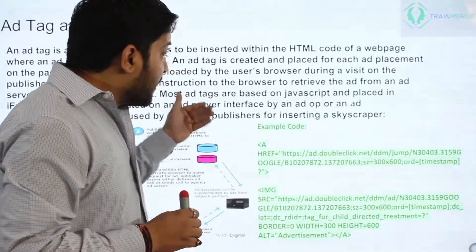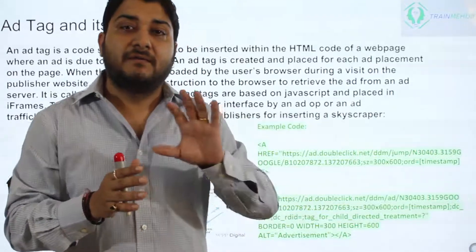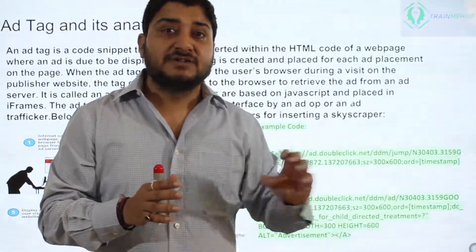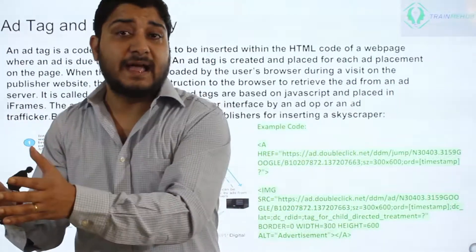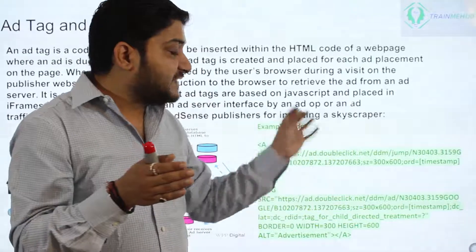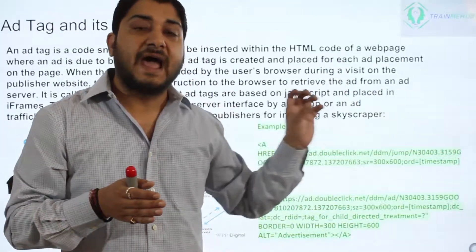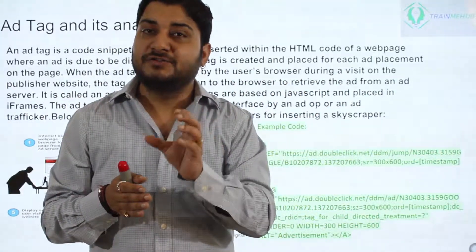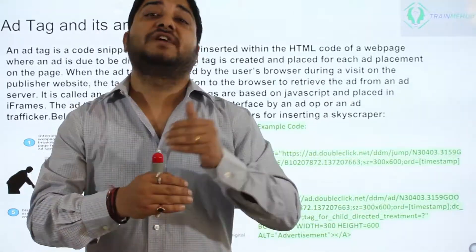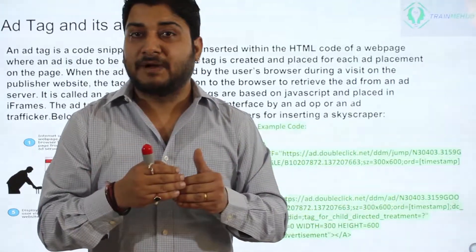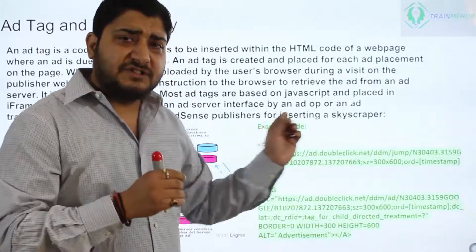The ad tag plays a very important role in rendering your campaign ads. Whatever settings you make in DoubleClick Campaign Manager, a small piece of code gets extracted once you've set up the campaign. This code needs to be shared with the publisher, and the publisher implements this code into their website — and that's where the whole function, the game of digital marketing and DoubleClick, starts to play.